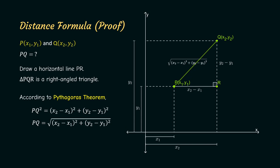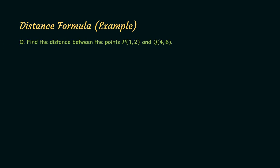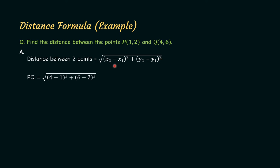We will now see an example problem. Find the distance between the points P and Q. We know that the distance between two points equals the square root of (x2 minus x1) squared plus (y2 minus y1) squared. Applying this formula: PQ equals the square root of (4 minus 1) squared plus (6 minus 2) squared, which gives us the square root of 3 squared plus 4 squared, so it equals 5. Therefore, the required length PQ is 5 units.